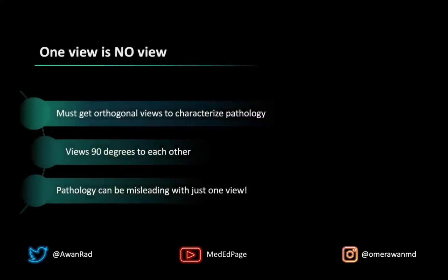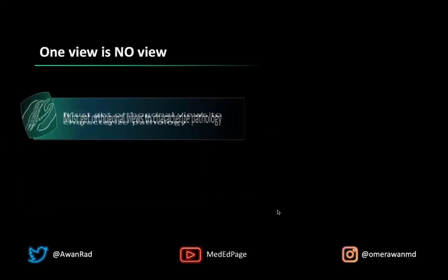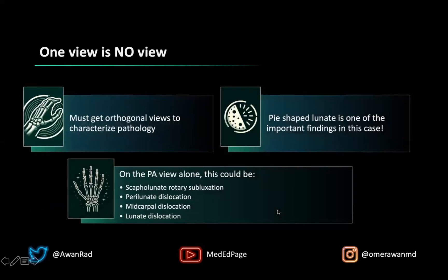The teaching point for this case really is that one view is no view. In radiology, in order to really characterize pathology well, you must get two views that are 90 degrees to each other to assess exactly what is going on. This is a nice example of how just looking at the PA radiograph is not sufficient — you really need two views to understand what's going on and decipher those four diagnoses. The finding on the PA radiograph was a pie-shaped lunate, indicative of instability or carpal malalignment, but it doesn't tell us exactly what the diagnosis is.